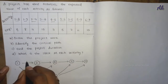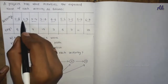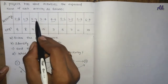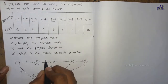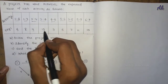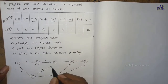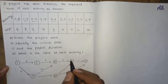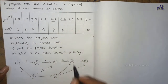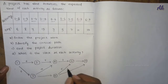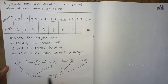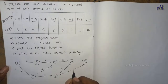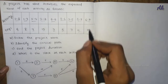Now we assign the time durations: from 1-2 the time taken is 6 days; 1-3 is 8 days; 2-4 is 7 days; 3-4 is 12 days; 4-6 is 3 days; 3-5 is 7 days; 5-7 is 11 days; and 6-7 is 10 days.